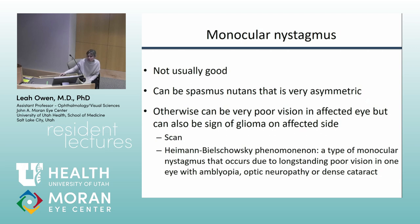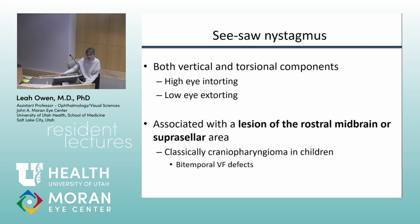Monocular nystagmus is never good — it can be spasmus nutans, which is very asymmetric, but you always have to scan monocular nystagmus. It's not always associated with a brain abnormality or glioma, but that possibility must be ruled out. The Heimann-Bielschowsky phenomenon is a monocular nystagmus due to very poor vision in one eye, usually related to amblyopia. However, if you see monocular nystagmus, your first thought must be to rule out a tumor.